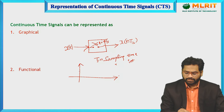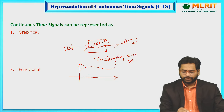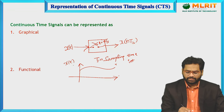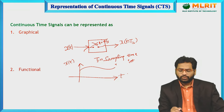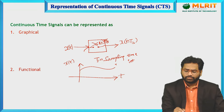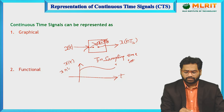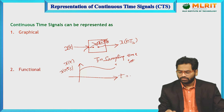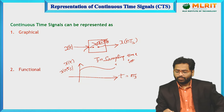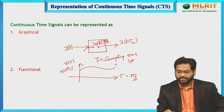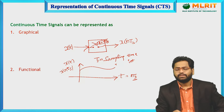For the continuous signal x(t), substituting t = nTs gives x(nTs). With the sampling interval Ts, we are generating the discrete time signal.